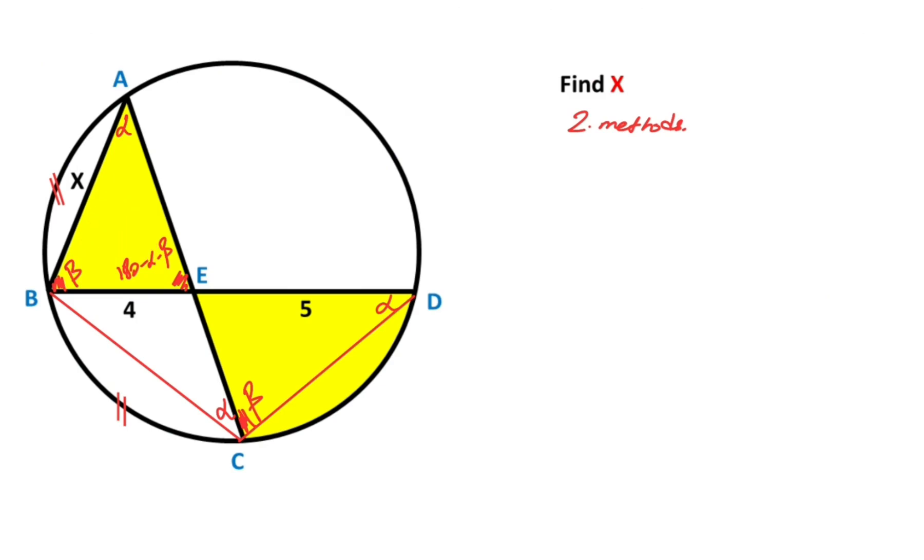Then for this triangle, if we use sine rule, 4 over sine alpha must be equal x over